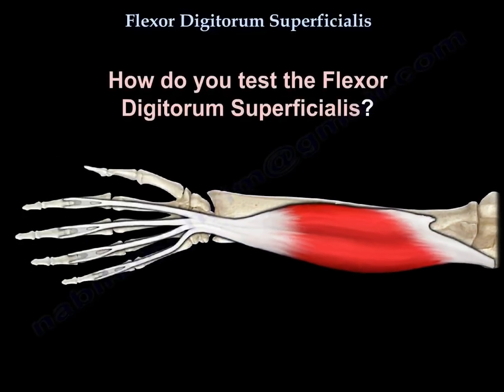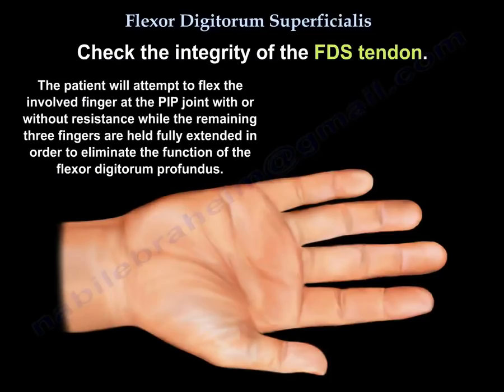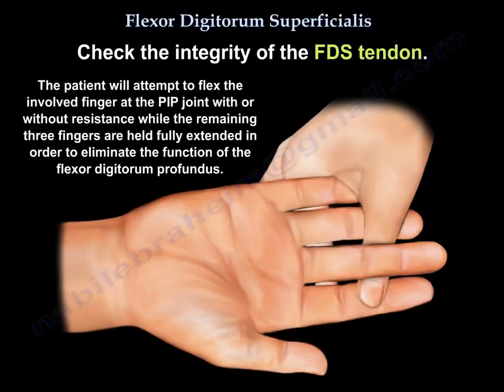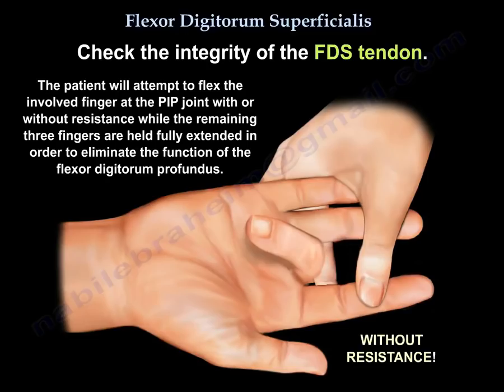To test for the flexor digitorum superficialis: the patient will attempt to flex the involved finger at the PIP joint with or without resistance, while the remaining three fingers are held fully extended in order to eliminate the function of the flexor digitorum profundus.